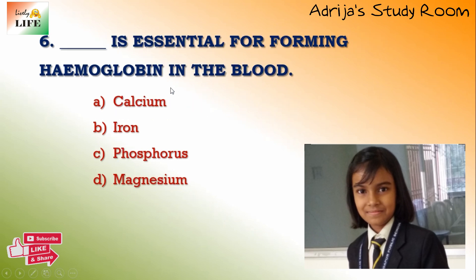Next question: dash is essential for forming hemoglobin in the blood. The minerals given are calcium, iron, phosphorus, and magnesium. Calcium is good for forming bones and teeth. Phosphorus is not the answer. Magnesium is also not the answer. Iron — yes, iron is essential for forming hemoglobin in the blood. So the answer is B.